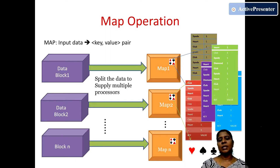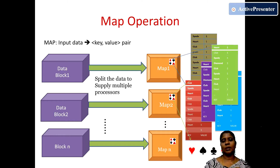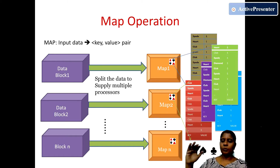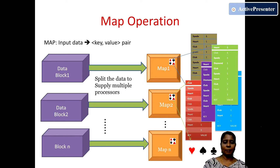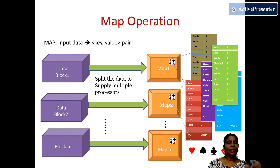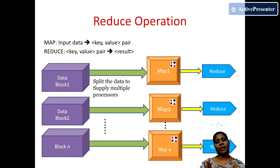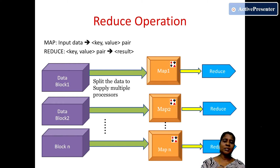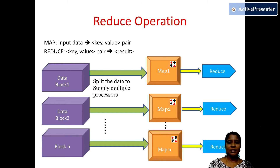So in this card game demonstration, the aim is to find the number of cards in each suit. When you give a huge amount of data, it is split into small blocks and given to the mapper. The mapper generates key-value pairs — each mapper creates its own key-value pair from its own data. This output is given to the reducer, which summarizes the result from the mapper, and the reduced result is given to the client.